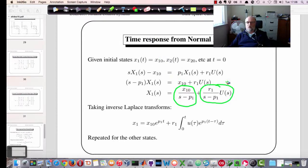This term is just a simple exponential decay with a gain equal to the initial condition. This one is slightly more complicated. It requires us to do convolution to determine the response of this component to an input that we need to specify. If we take inverse Laplace transforms of that, then we end up with this equation here. So X1 is X10, the initial condition of X1 times e to the p1t. And then we've got R1 times the integral between 0 and T of U of tau e to the p1(T minus tau) d tau, which is a convolution integral representing the response of this system here.